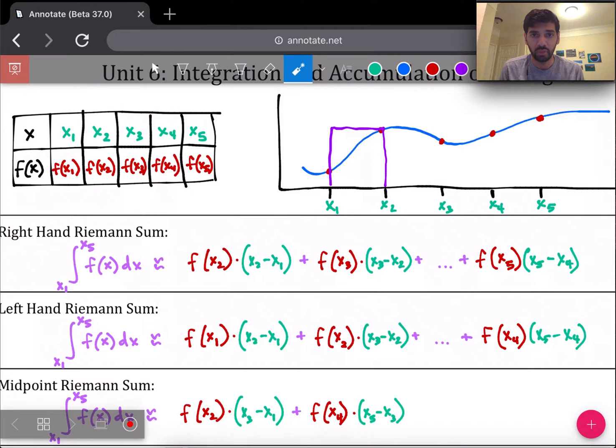So this is the right hand Riemann sum, because I use the right endpoints of each interval. If I use the left endpoint of each interval, your rectangles will look different, because I would be starting at x1, drawing my rectangle down there. And I would use x2 as my next height, so on and so forth.